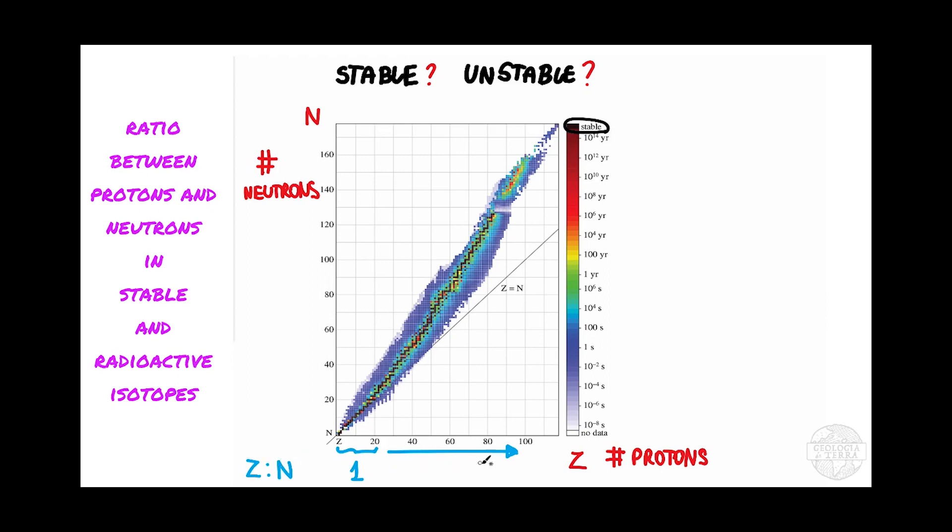The stable isotopes will form this valley of stability from hydrogen to uranium, like we see here in black.